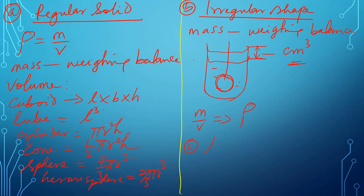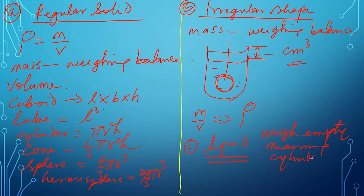For a liquid, you can measure its volume using a measuring cylinder, pipette, burette, and so on. The mass of a liquid is obtained by first weighing an empty container, noting the mass, then pouring the liquid in and taking the mass again. The difference gives you the mass of the liquid. Then use mass over volume to get the density. There is also a special instrument for measuring the density of a liquid called the hydrometer.